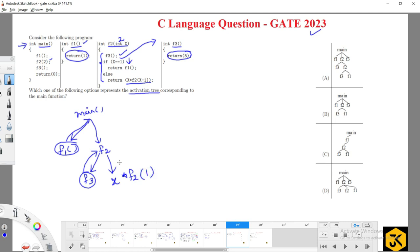The x value is 2, and f2 of 1 means it is again recursively calling the same function. f2 is calling the same function f2.